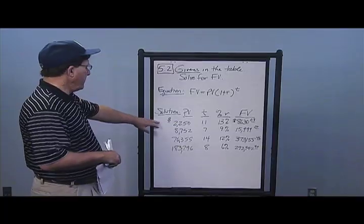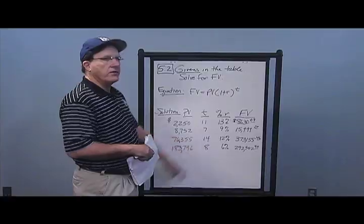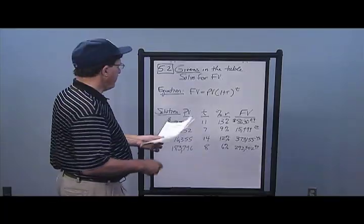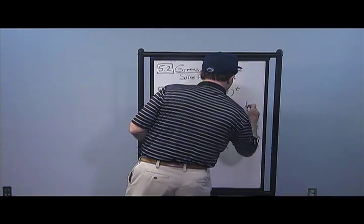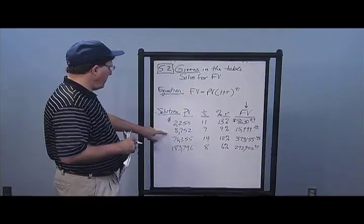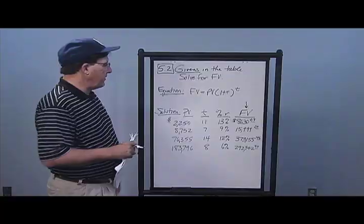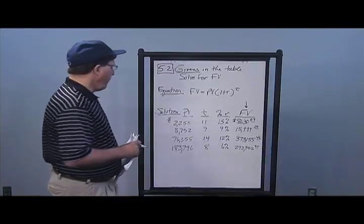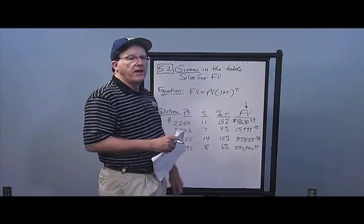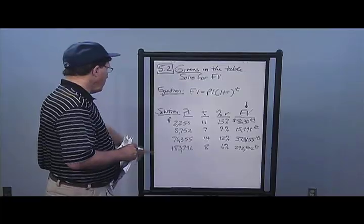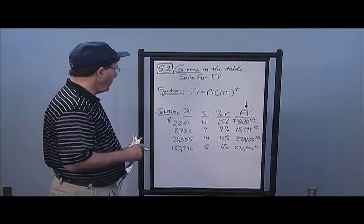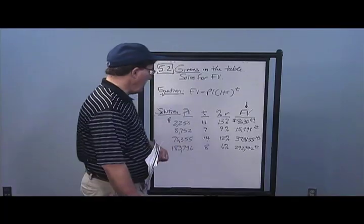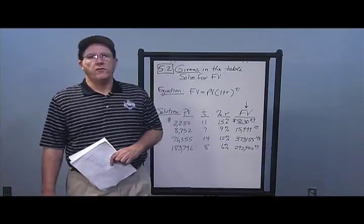In the first case, $2,250 at 13% for 11 years turns into $8,630.69. Second case, $8,752 for 7 years at 9% comes out to $15,999.00. Third case, $76,355 for 14 years at 12% gives $373,155.46. And $183,796 for 8 years at 6% turns into $292,942.90. Those are your answers for problem number two.